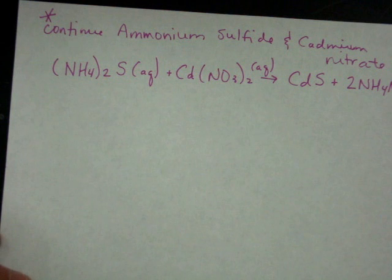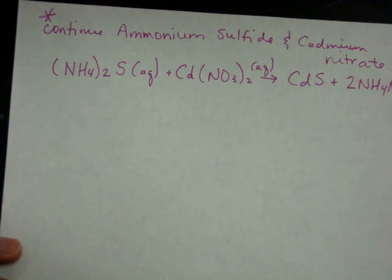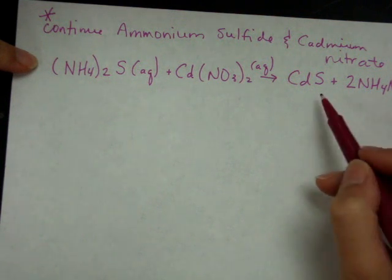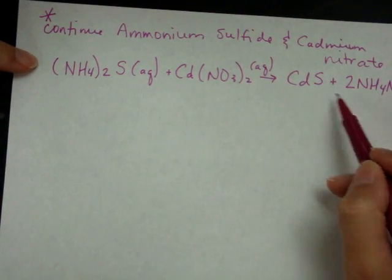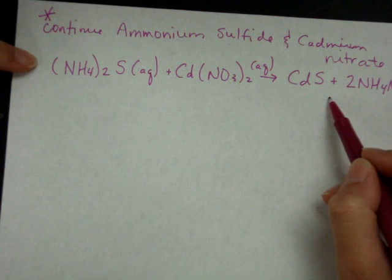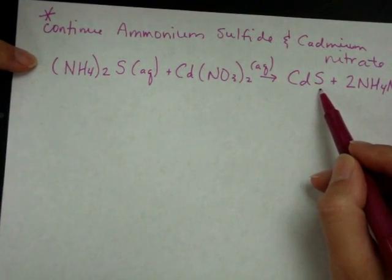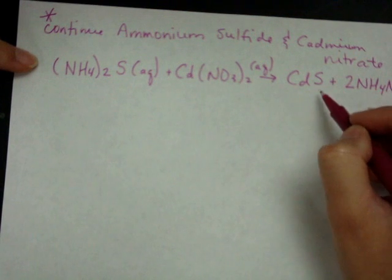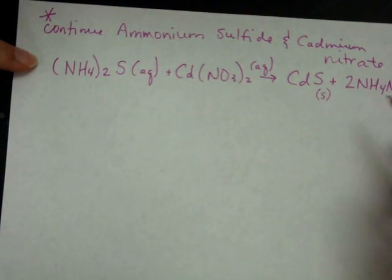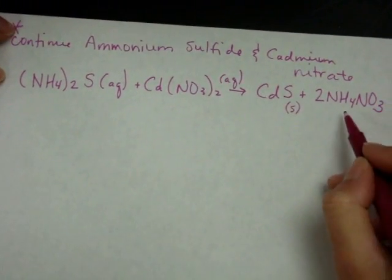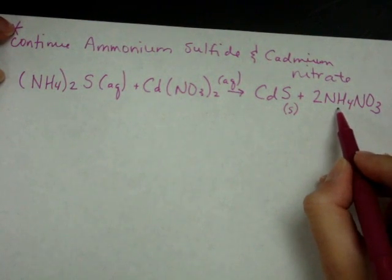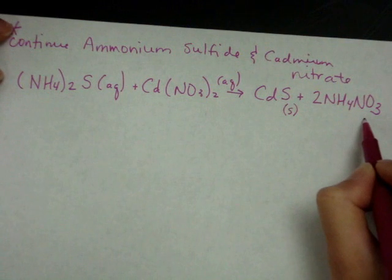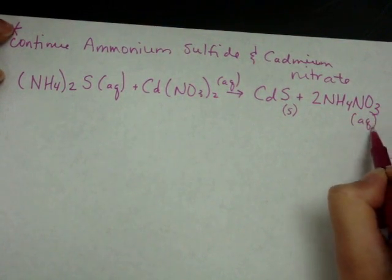Continuing with the ammonium sulfide and cadmium nitrate problem. We had written out the balanced chemical equation. We needed to determine whether or not we had aqueous or solid for our products. Sulfides are generally insoluble, and so is a heavy metal cadmium. So that guy is probably going to be solid. And then ammonium nitrate over here. Ammonium is a group one, very soluble. Nitrate is always soluble as well. So that's going to be aqueous.